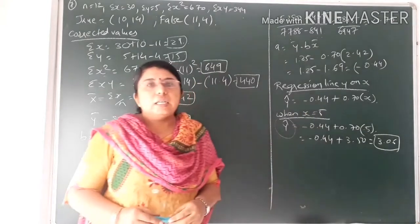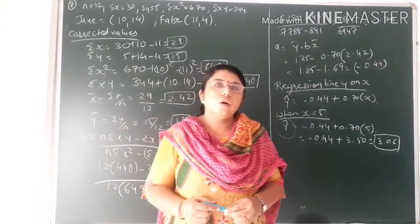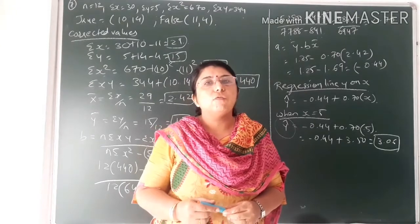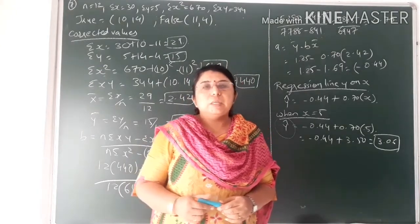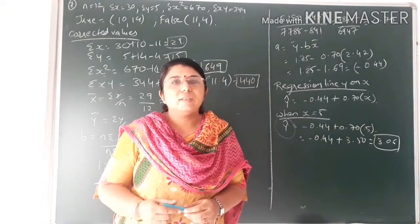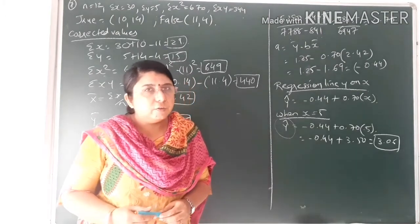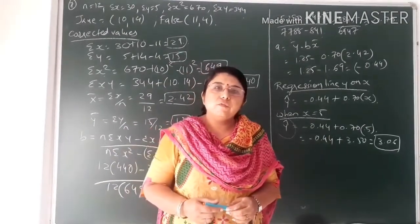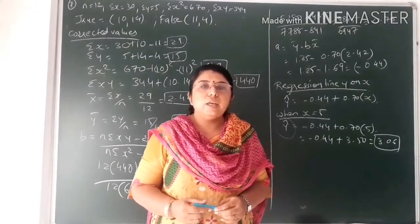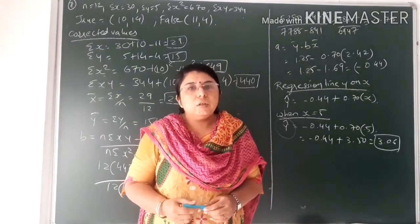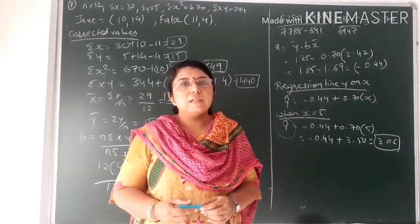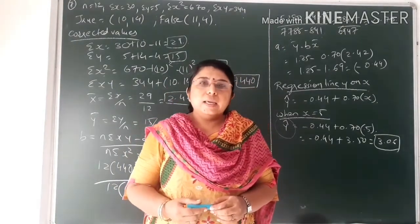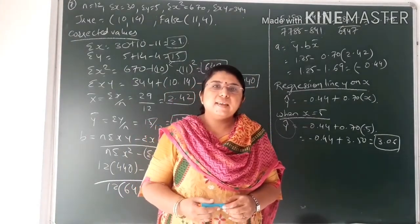So students, in this lecture we studied two things: the new topic of coefficient of determination, and a typical sum — question number 7 of Section F exercise — involving correction of wrong data. Revise these two sums from the video lecture. In the next video lecture we will do a few more typical sums from exercise 2. Till then, goodbye. Keep practicing. Stay blessed.